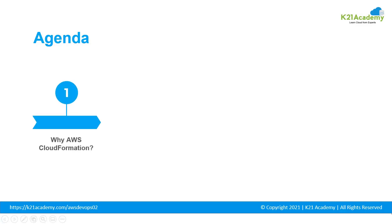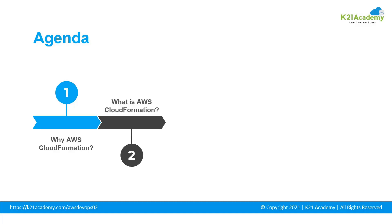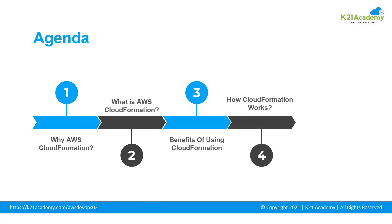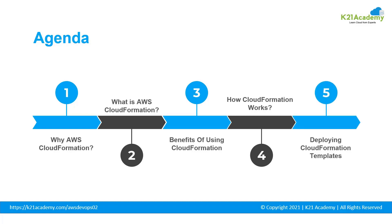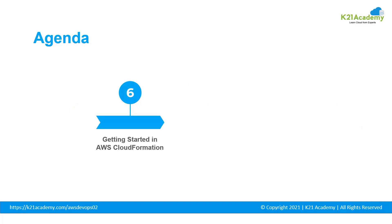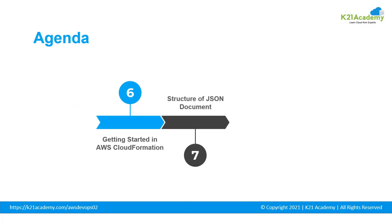Let us take a quick glance at the agenda. We will start by understanding why we need AWS CloudFormation, then what is AWS CloudFormation, the benefits of using CloudFormation, and how CloudFormation works. Then we'll cover how to deploy CloudFormation templates, get started with CloudFormation, and understand the structure of a JSON document. At the end, we will have two demos: the first creating an S3 bucket from CloudFormation, and the second installing the LAMP package on EC2 using CloudFormation.